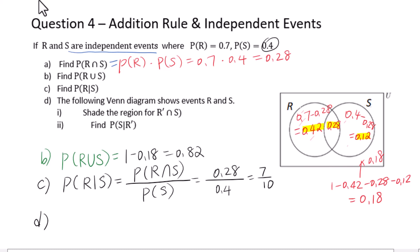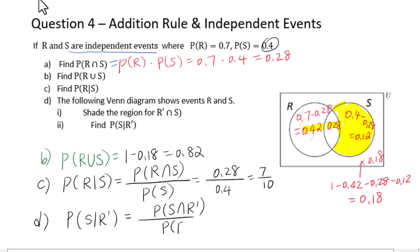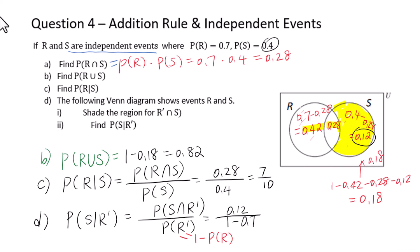For part d, the Venn diagram shows events R and S. Shade the region for R' ∩ S, which means not R but S — we shade that area. Then find P(S | R'): that equals P(S ∩ R') over P(R'). P(S ∩ R') = 0.12. P(R') = 1 minus P(R) = 1 minus 0.7 = 0.3. So we get 0.12 over 0.3 = 2 over 5.